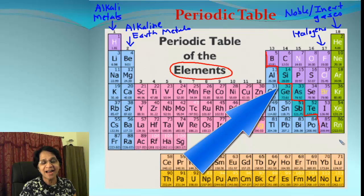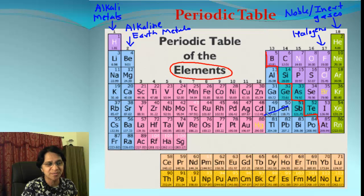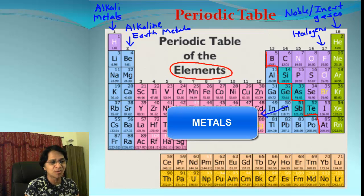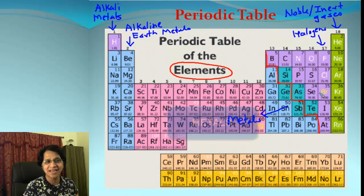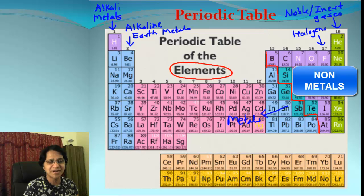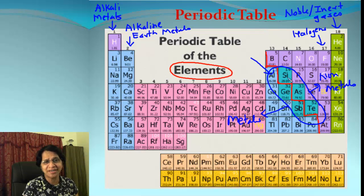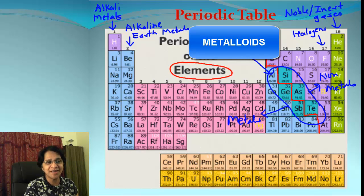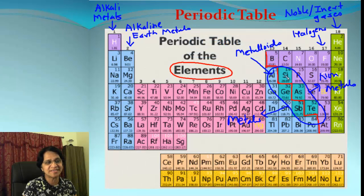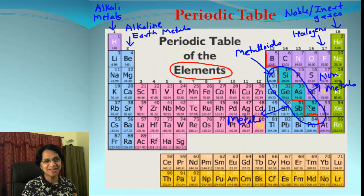Before we get to the groups and periods, do you see this zigzag line drawn through the periodic table? That's the imaginary line which divides the periodic table into two parts. All the elements on the left side of that line are classified as metals, and elements on the right-hand side are classified as non-metals. What about the elements just around that line? Those elements are neither metals nor completely non-metals — in fact, they show properties of both metals and non-metals. We call them metalloids.